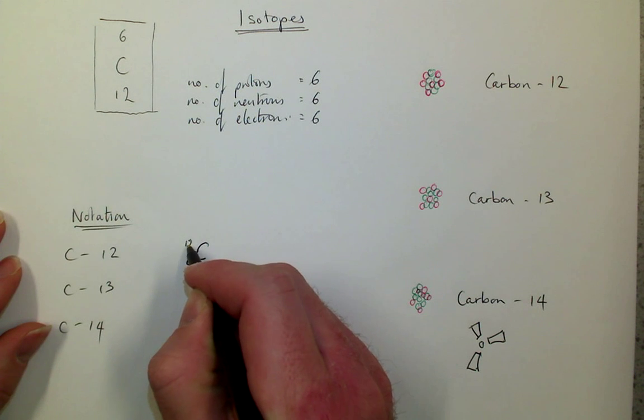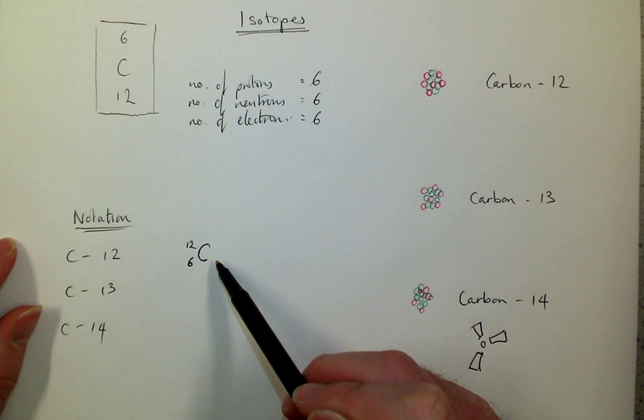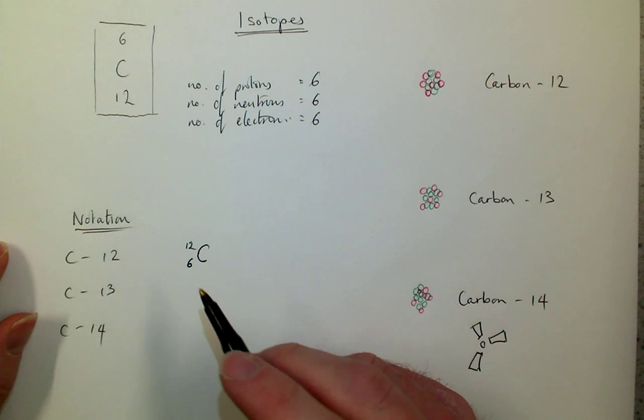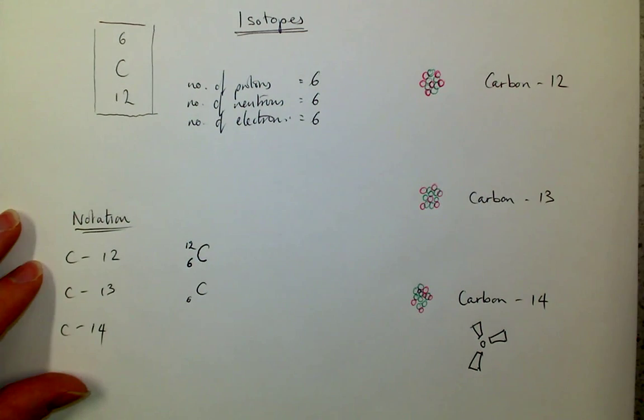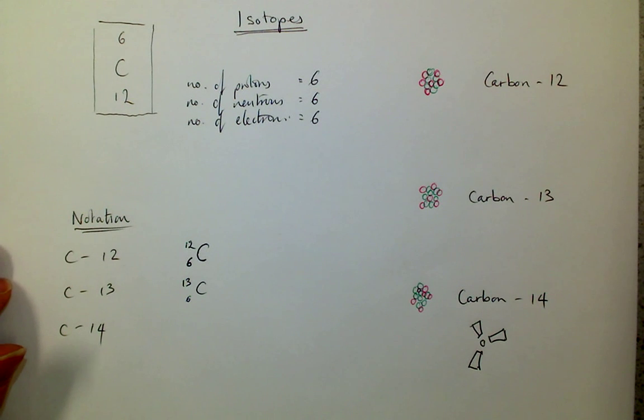And 12, the mass number at the top. Don't get confused with chemistry when you use a small subscript letter afterwards to indicate how many of the atom you've got in a formula. And here, carbon-13 will look at 6 at the bottom, because the proton number doesn't change if it's carbon. 13 at the top.